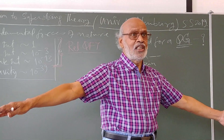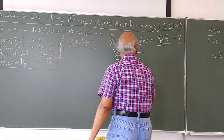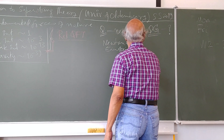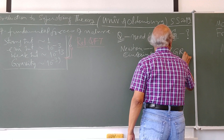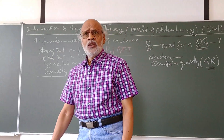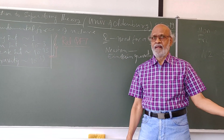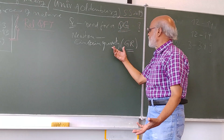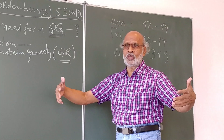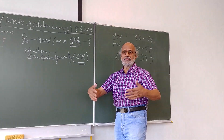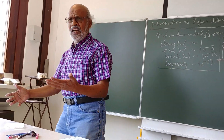Einstein's general relativity is an extremely well understood and extremely successful theory. It describes the physics at large scales: the physics of the universe, the solar system, neutron stars, virtual stars, black holes, wormholes — all large distance physics — very accurately and very nicely.